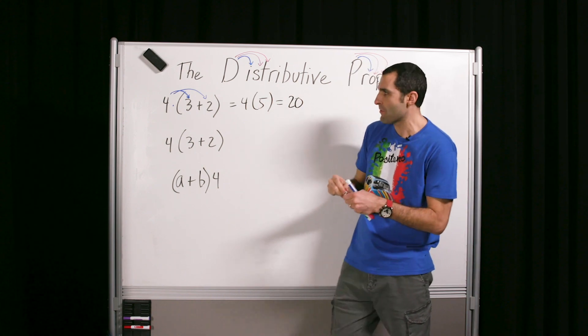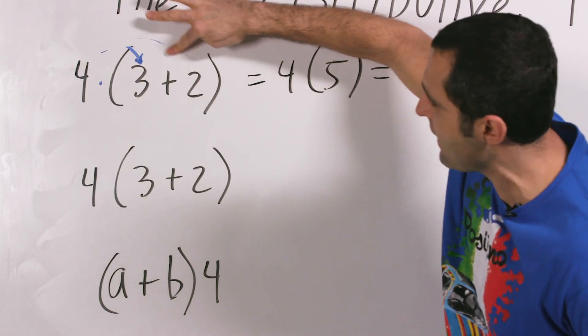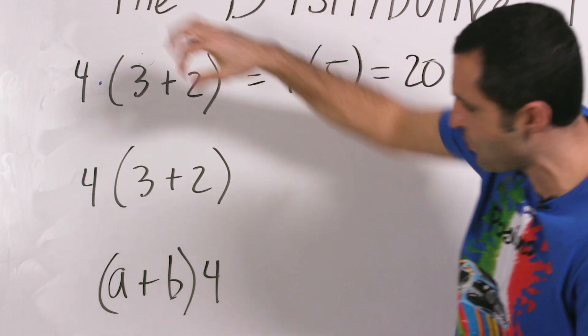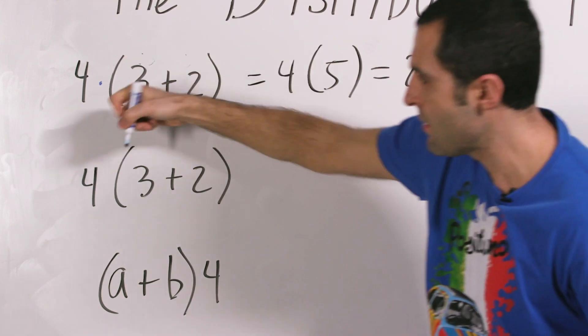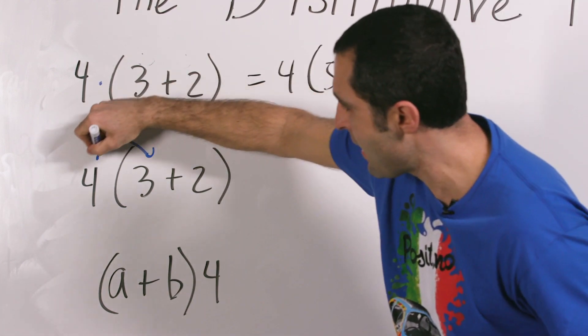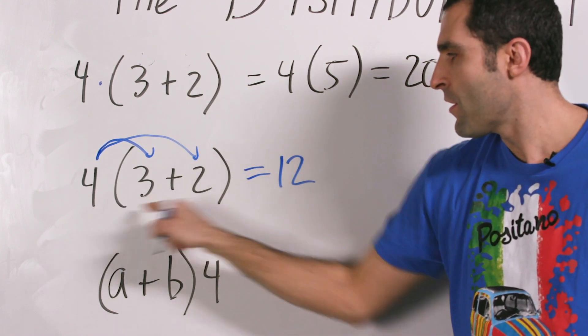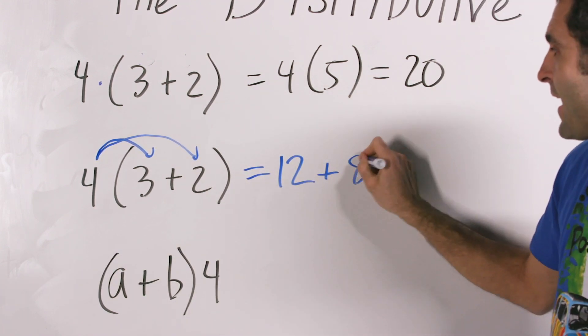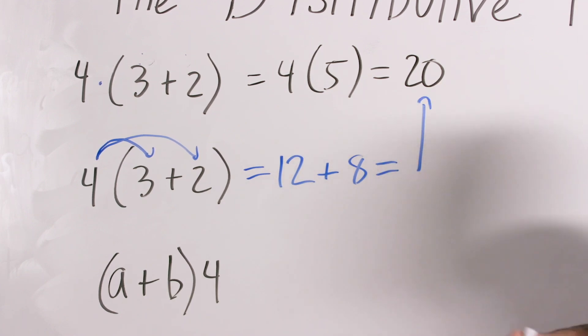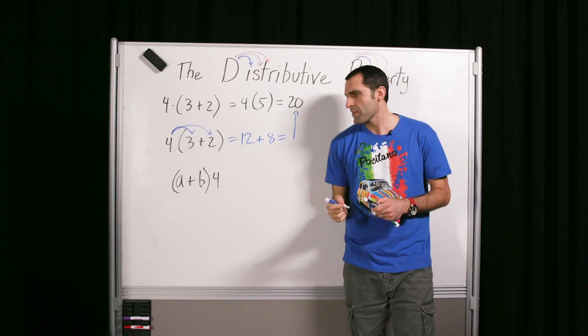Now let's distribute. So maybe this is a little misleading. Let's lead you to here. Four times three, and a four times a two. Four times three is twelve. Four times two is eight. Lo and behold is twenty again. So we see that it works.